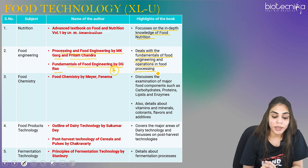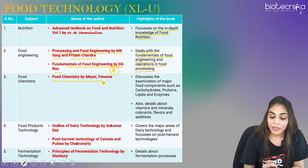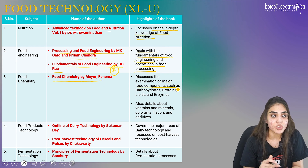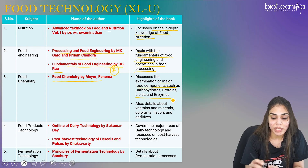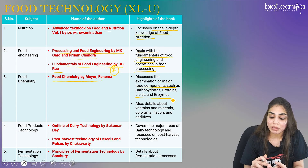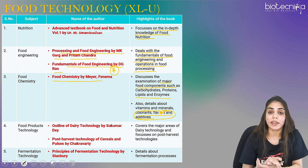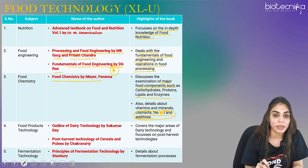The third section is food chemistry. You can go for Food Chemistry by Meir, which discusses all major food components — biomolecules such as carbohydrates, proteins, amino acids, lipids, and enzymes. It also provides details about vitamins, minerals, water, colorants, flavors, and additives. If you analyze the GATE Life Sciences food technology syllabus, there are separate topics for colorants, flavors, and additives.